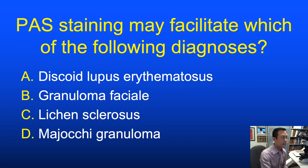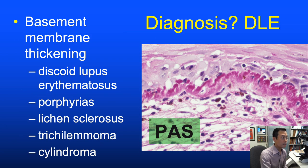The PAS stain can also facilitate diagnosis. Basement membrane thickening is a feature of certain disorders—discoid lupus is probably best known, but also porphyrias, lichen sclerosus, and some tumors such as trichilemmoma and cylindroma—and this thickening can be highlighted by the PAS stain.